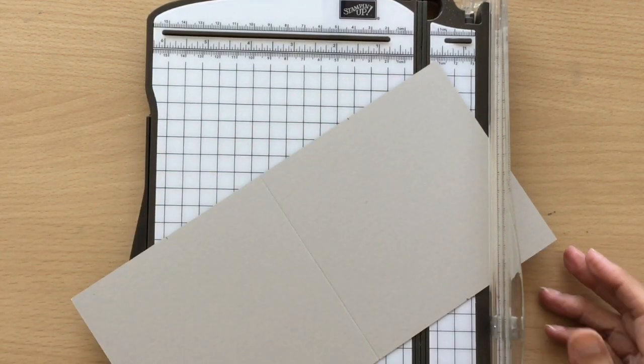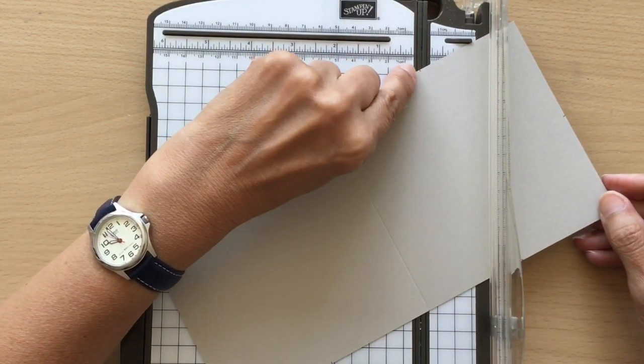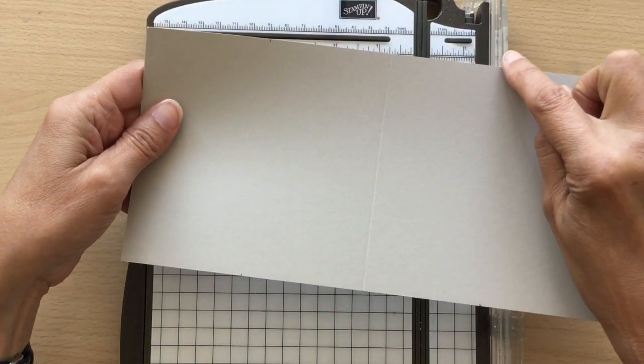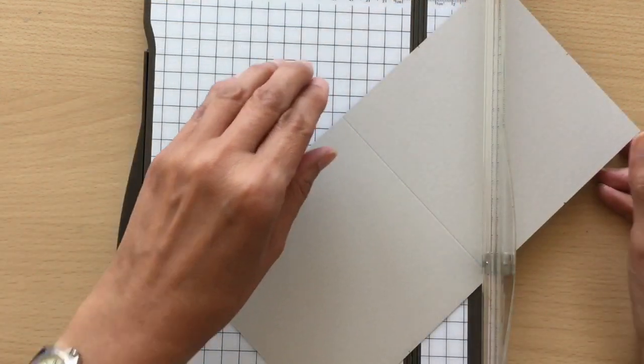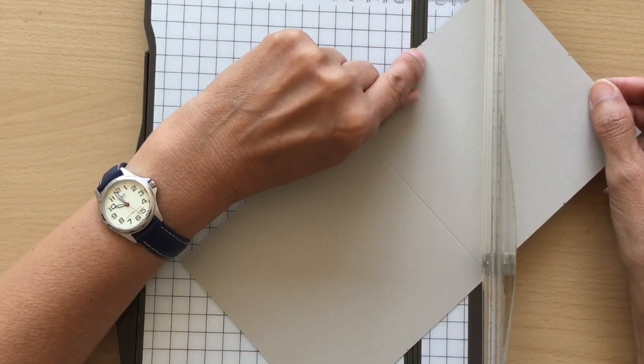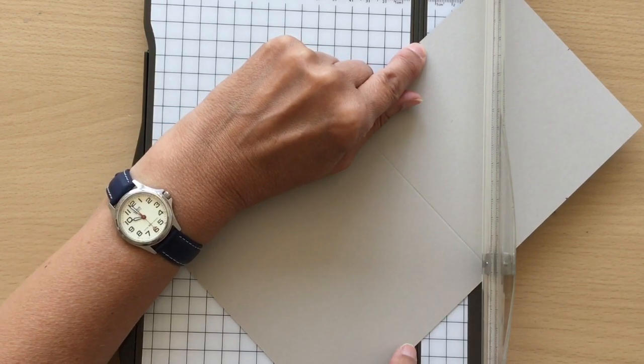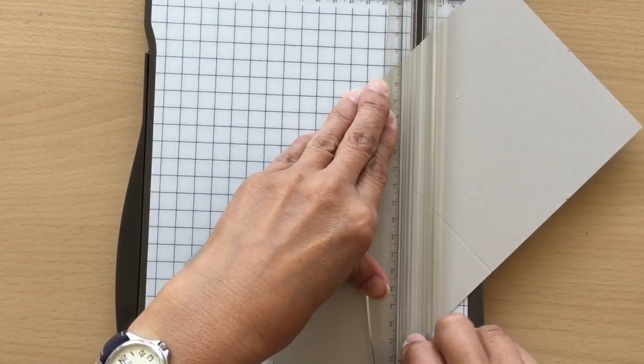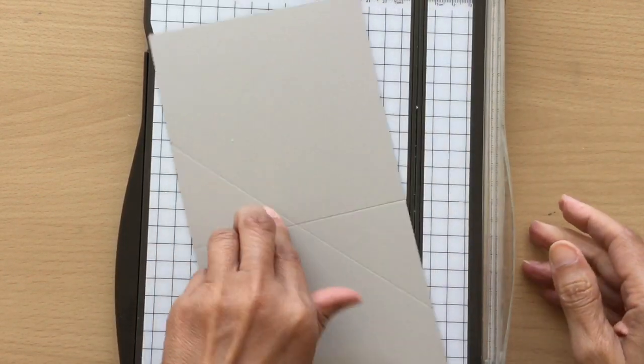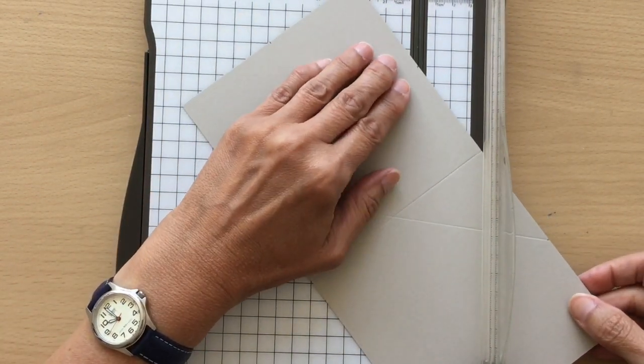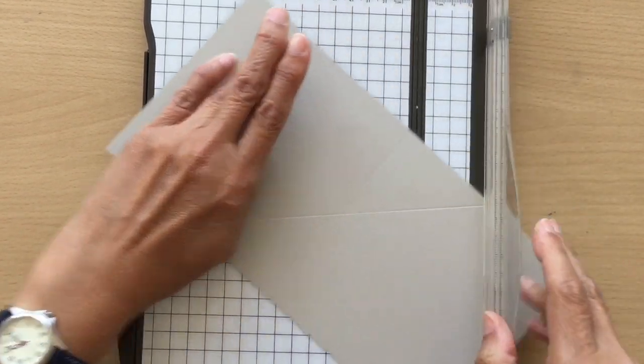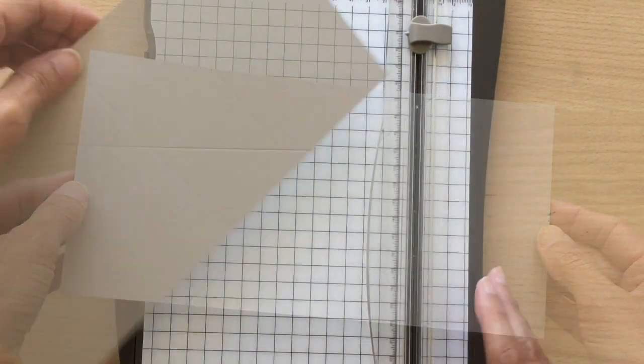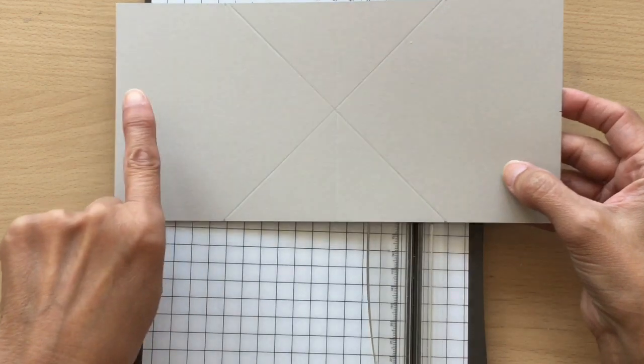Now we're going to do some scoring. From our little pencil line here to the one on the other side, we're going to score. Put your first pencil mark in this groove and the second one in this groove, and then when you close make sure it doesn't move. Then we're going to do it again on the other side so we're forming a cross.